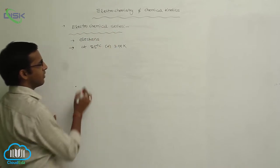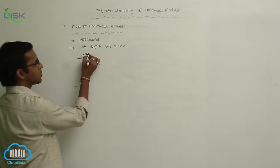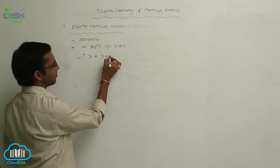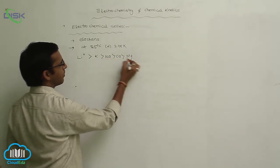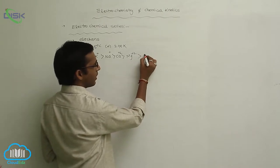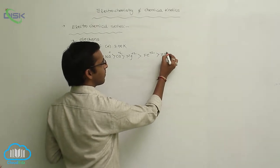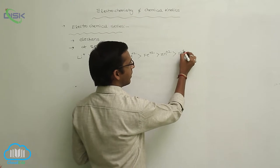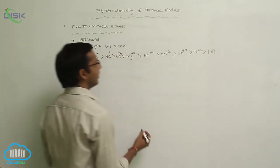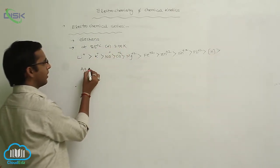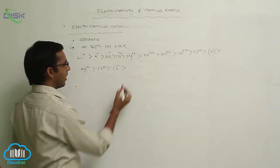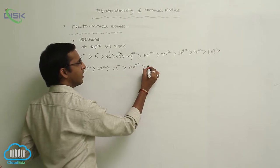The electrochemical series for various metals starts with lithium (Li⁺), followed by potassium, sodium, calcium, magnesium — all carrying ionic solutions Ca²⁺, Mg²⁺ — then Fe²⁺ (iron), Zn²⁺ (zinc), Sn²⁺ (tin), Pb²⁺ (lead), hydrogen, silver (Ag⁺), copper, Cl⁻ (chloride electrode), Au³⁺, and F⁻.